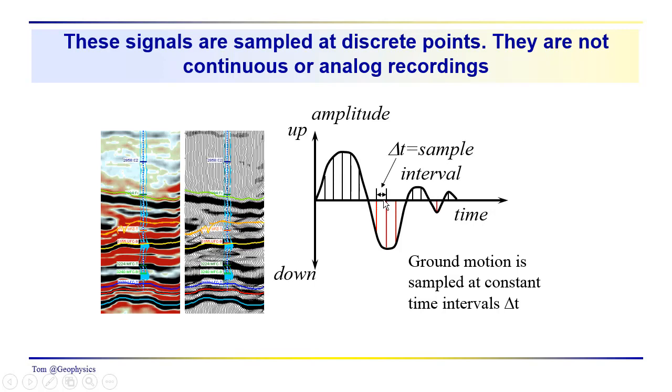We have a sample every, it could be four milliseconds, every two milliseconds, this would be your sample interval. You can see the ground move up and down. You could be measuring pressure variations, particle velocity, particle displacement. But basically, we're measuring it at constant intervals of time, so we have a value here, a value here. We don't have values between, so we're kind of connecting them with a smooth line.